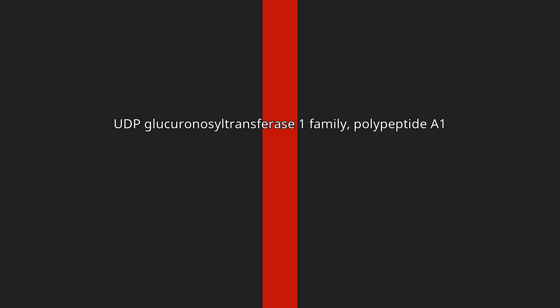UGT1A1 is a uridine-diphosphate-glucuronosyltransferase (UDP-glucuronosyltransferase), an enzyme of the glucuronidation pathway that transforms small lipophilic, fat-soluble molecules, such as steroids, bilirubin, hormones, and drugs into water-soluble, excretable metabolites.